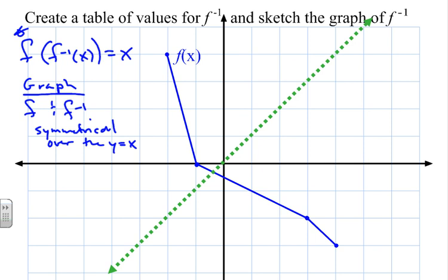I know that this new graph would have to be symmetrical over this line. This graph of the inverse of f. I'm going to make a different color. I'm going to make this red. So this inverse graph, I'm going to make red, but it has to be symmetrical over this y equals x line.